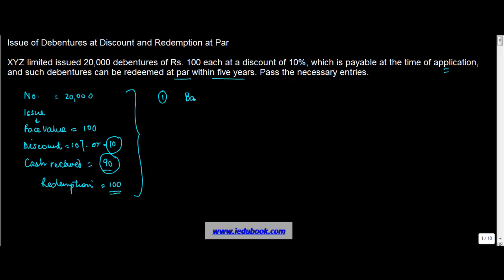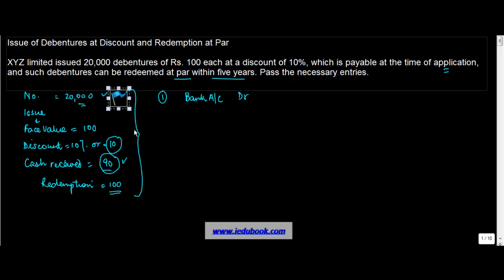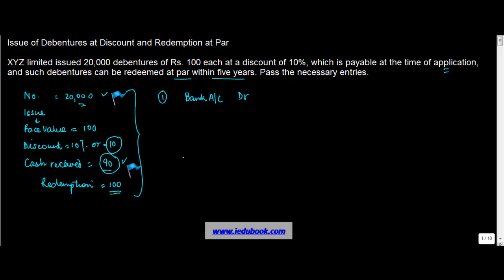So you debit the bank account. How much will you debit the bank account for? There are 20,000 debentures on which you receive cash at the rate of 90 per debenture. So 20,000 into 90 will give you 1,800,000.